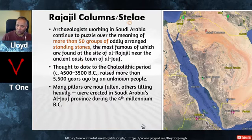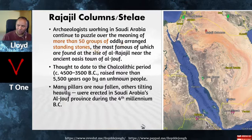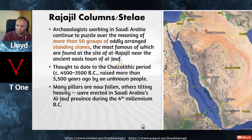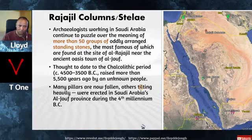These standing stones are thought to date to the Chalcolithic period — 4500 to 3500 BC — meaning they were raised more than 5,500 years ago by an unknown people, about 6,500 years ago. Many pillars are now fallen, others are tilting heavily. These were erected in Saudi Arabia's Al-Jauf province during the 4th millennium BC.